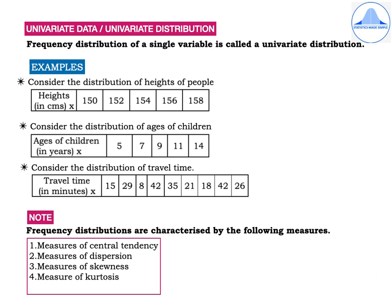So in all these three examples, we have only a single variable which is present and hence it constitutes a univariate data or univariate distribution.